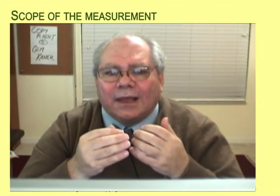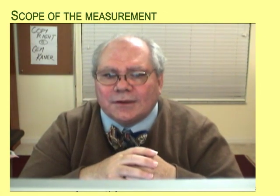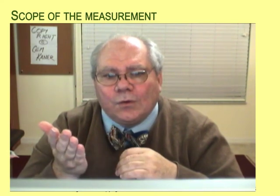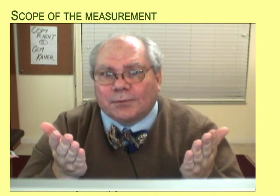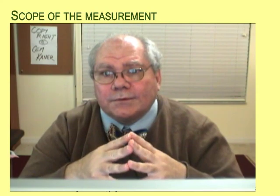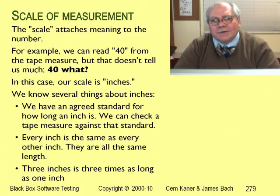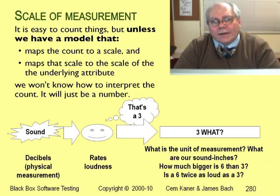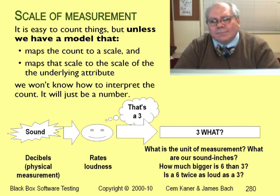As a software example, suppose we were trying to estimate the quality of a program. We might be interested in only that program, or in all programs written by a specific person or team, or in all programs made by this company — three very different scopes. We'll close this simple example by considering our scale of measurement. The reading we got off the tape measure was 40, but 40 doesn't mean much until we add the units of measurement: 40 inches. Our scale was width as measured in inches. Scale of measurement is critically important — without it, our measurements are like 40: meaningless, because you don't know 40 of what.